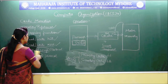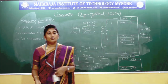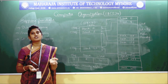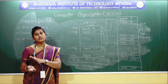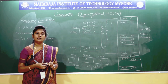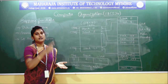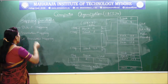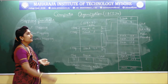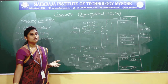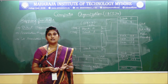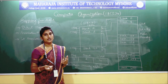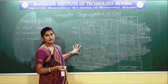Moving on to the next topic — the mapping functions. As already discussed, mapping function means moving the blocks of data from your main memory to your cache memory. There will be three types of mapping techniques. The very first is direct mapping. In this example, we have taken the cache memory of block size 127 blocks.